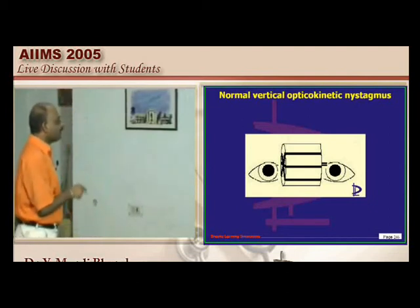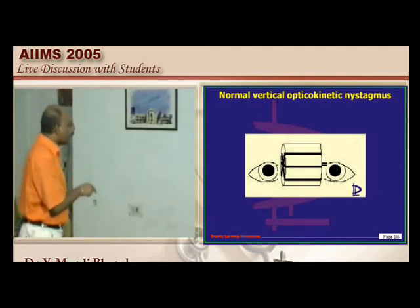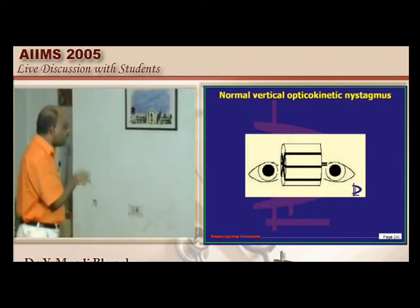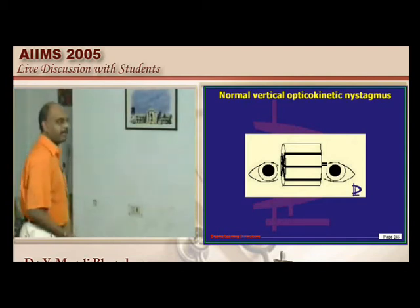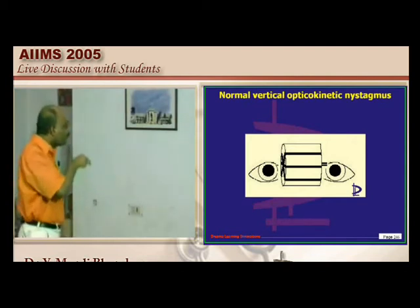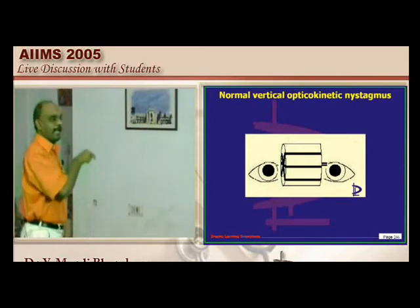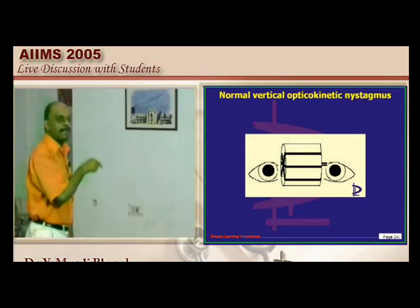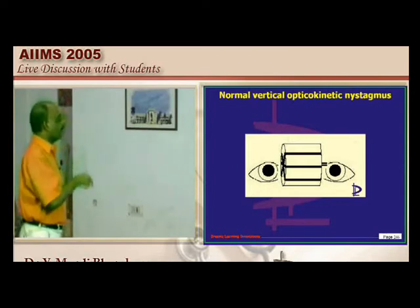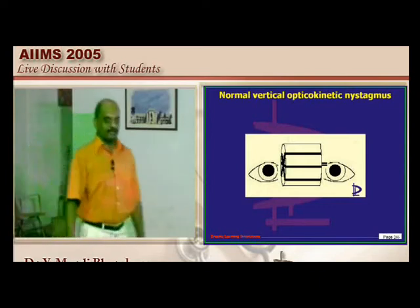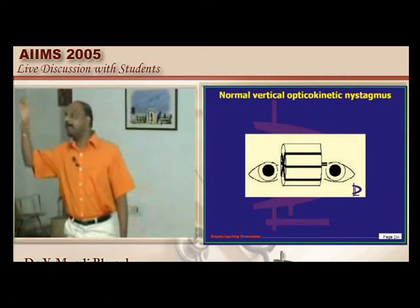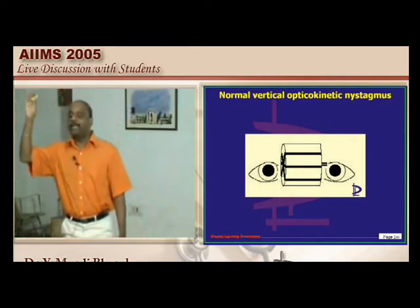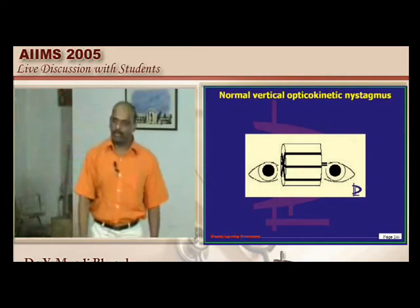Vertical nystagmus is also a normal response with fast saccades as the drum rolls. If saccades become slow, that is abnormal optokinetic nystagmus — classical of parietal lobe involvement.